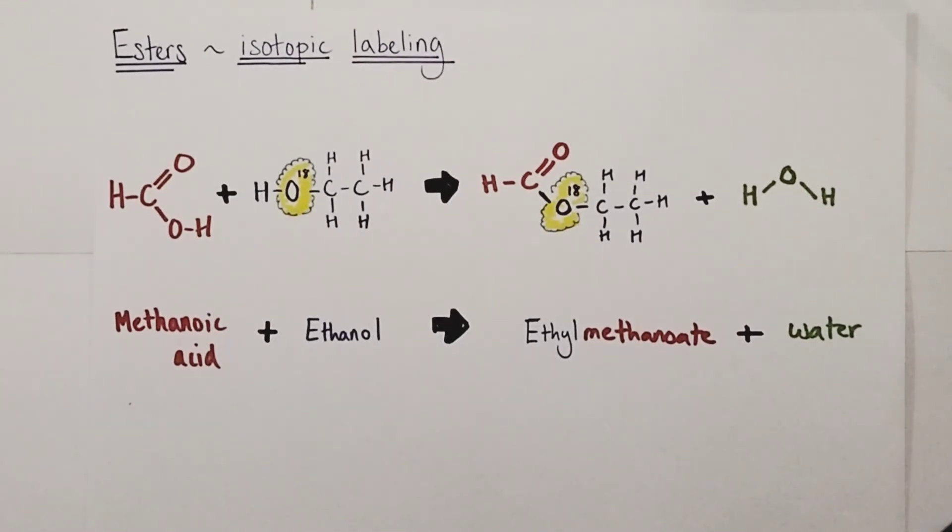This second example is also a really interesting illustration of how we can prove experimentally that it is the oxygen in the OH group of the carboxylic acid which is lost in the formation of the water, and not the OH group from the alcohol. We do this by using a radioactive isotope of oxygen in the alcohol, that's oxygen-18, which will decay in a predictable manner and produce radioactive emissions that can be tracked and therefore be followed throughout the reaction.